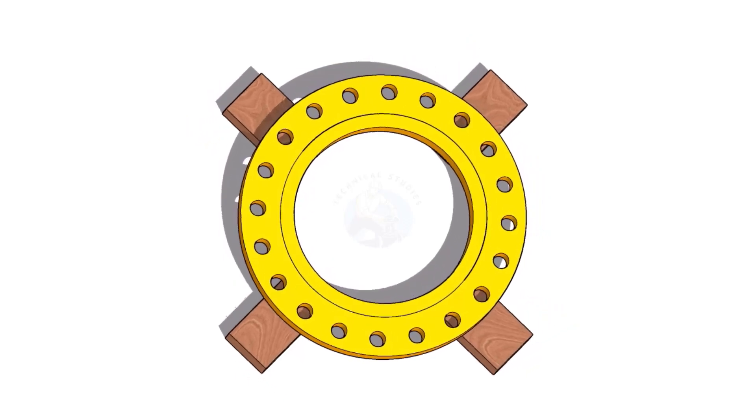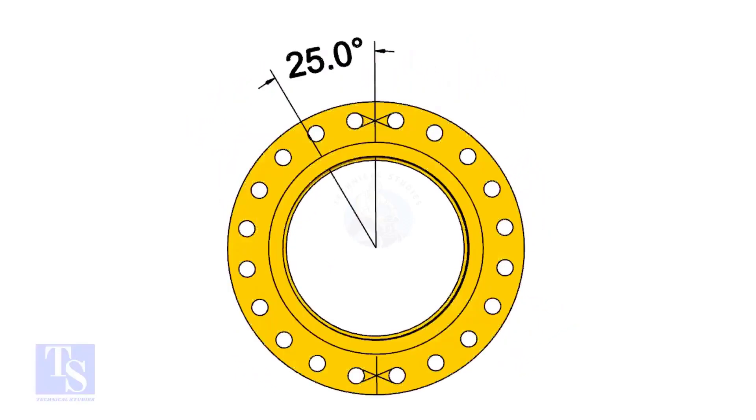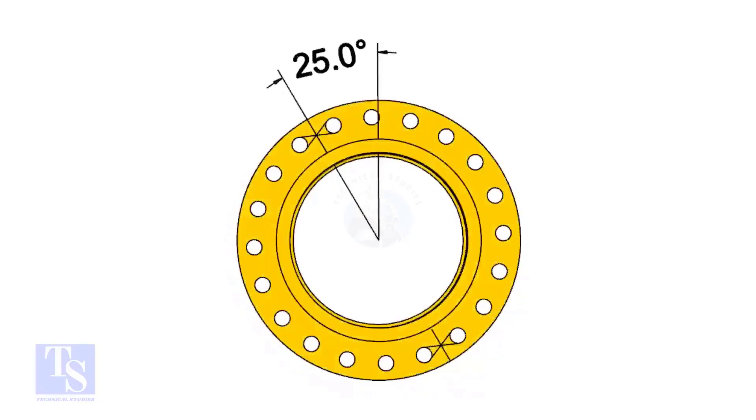The pipe and the flange size is 16 inch, and the flange will rotate 25 degree anti-clockwise. Hope you all know the difference between clockwise and anti-clockwise rotation.